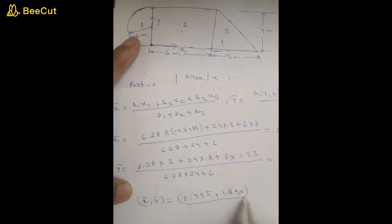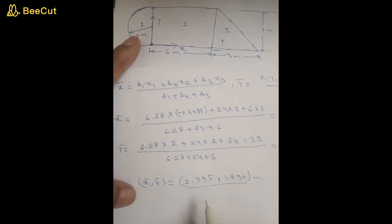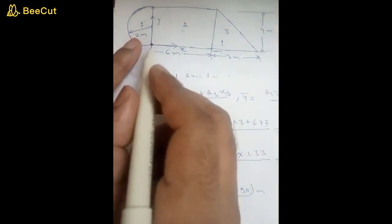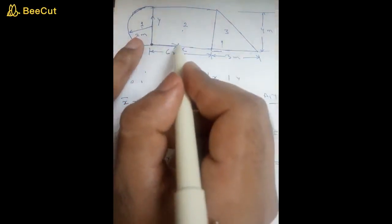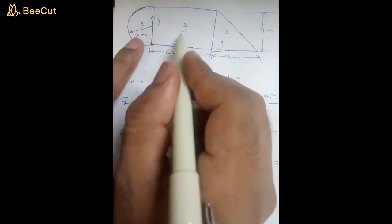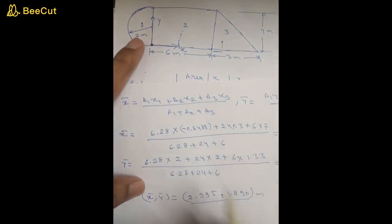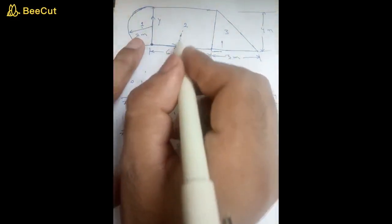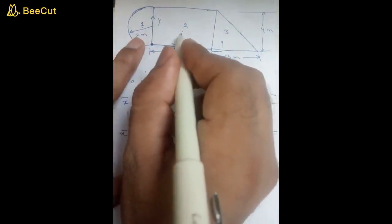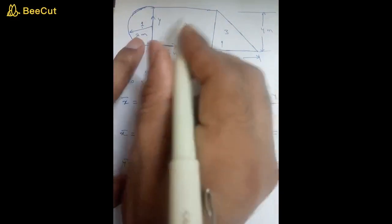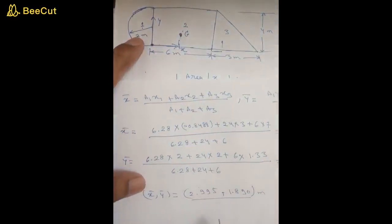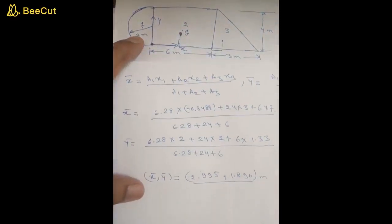This distance is measured from the origin. So 2.995 meters locates the centroid along the x-axis and 1.890 meters along the y-axis — somewhere near this location on the figure. That is where the centroid of the composite shape will be located. Hope you understood this. Thanks for watching.